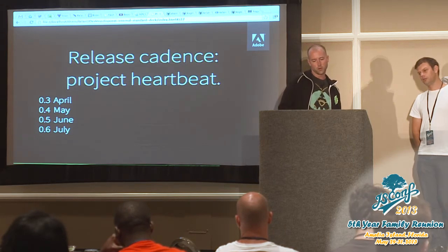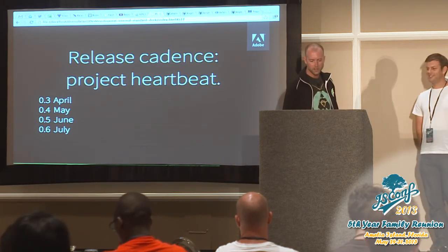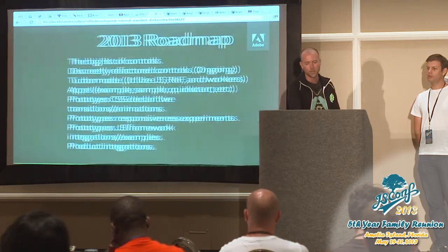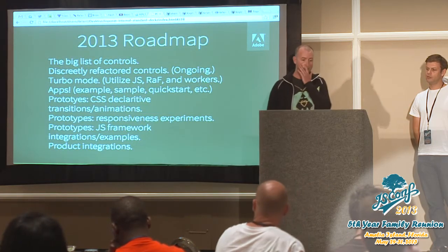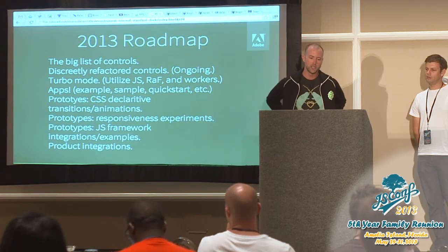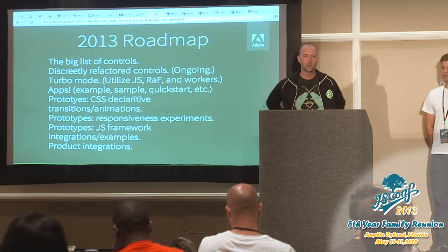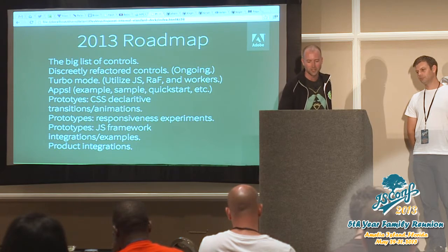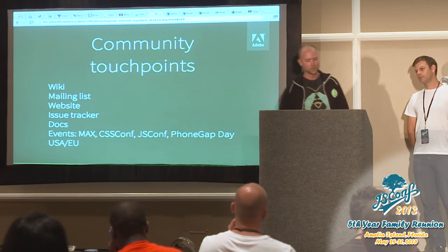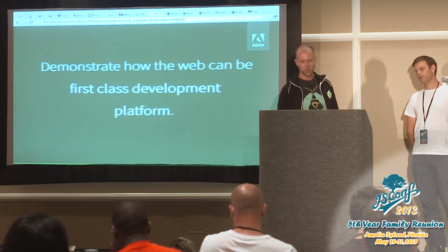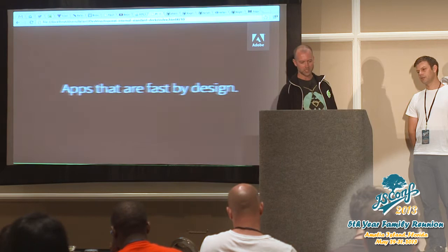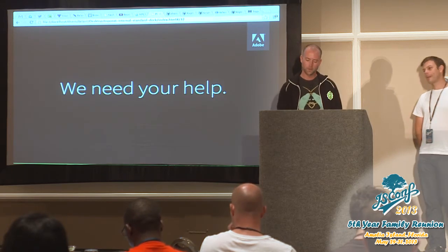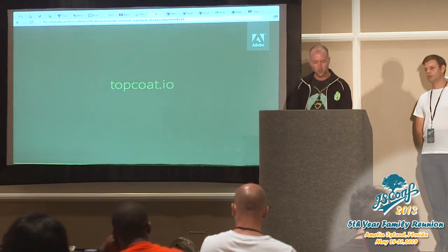We should be shipping 0.4 in the next day. 0.5 is coming in June, and in July I think we're going to ship 1.0 for PhoneGap Day. There's a ton of stuff in our roadmap. One highlight is called Turbo Mode — we think we found a way to make CSS even faster still. If you're curious about that, ask me later. We want to see the web be a first-class dev platform by building apps that are fast by default. We need your help — find out more at topcoat.io.